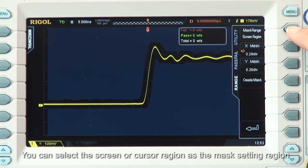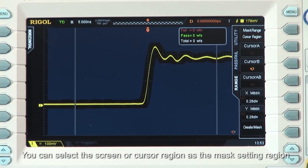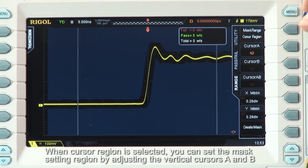You can select the screen or cursor region as the mask setting region. When cursor regions are selected, you can set the mask setting region by adjusting the vertical cursors A and B.